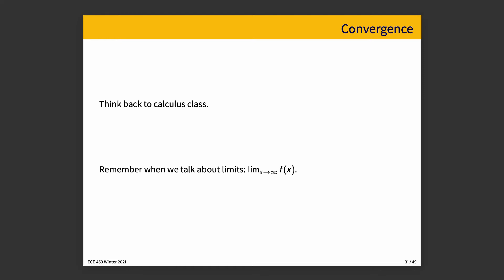If you think back to calculus class — if you can remember all the way back to first year — you will have discussed a limit: a limit as x goes to infinity of f of x. You will have an answer to this if that function does converge on a value. So if the function f of x is 1 over x squared, it is possible to compute the limit as x goes to infinity, and it does have a value. The value in that case goes to 0.